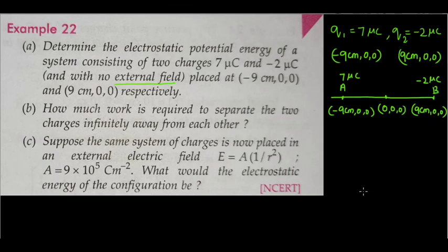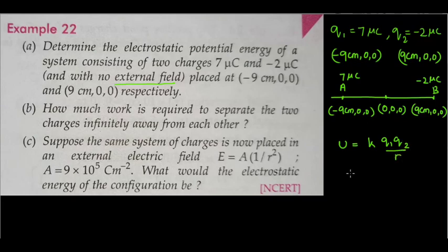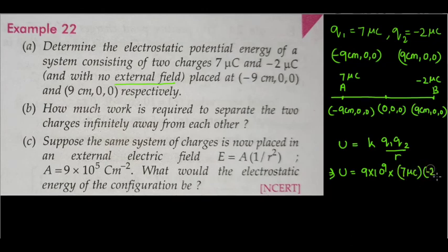In the absence of any external electric field or external electric potential, the potential energy of a two-charge system is given by the formula U = k * q1 * q2 / r. So let us calculate: U = k * q1 * q2 / r, where k is 9 × 10⁹, q1 is 7 micro coulombs, and q2 is minus 2 micro coulombs.